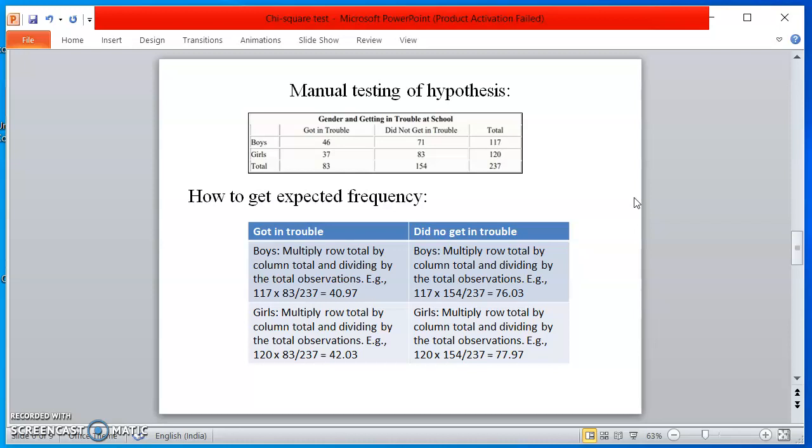And 37 girls were there, total 83. Did not get in trouble: 71 boys were there, and 83 girls were there, altogether 154. Total score for boys, 117. Total score for girls, 120. Overall, 237 respondents.